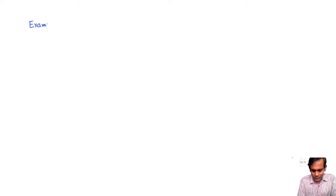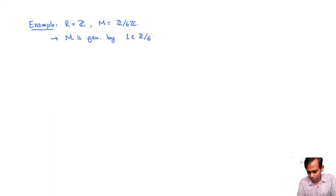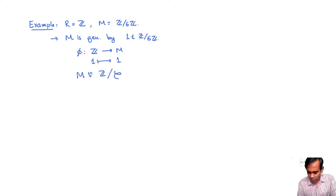Let us start with a really simple example. Take R to be the ring Z of all integers and take M to be Z mod 6Z. The most straightforward way is to note that M is generated by the residue class of 1. So we define phi from Z^1 to M by taking 1 to that generator. We get M is isomorphic to Z modulo the column space of the 1-by-1 matrix with single entry 6.